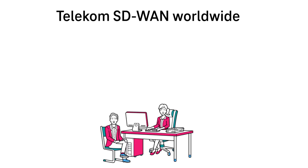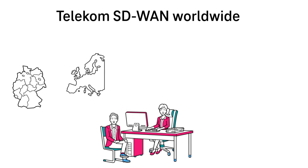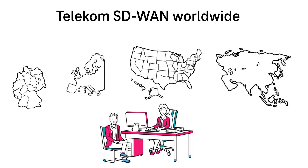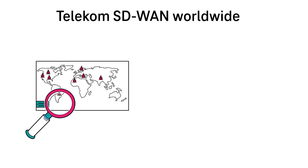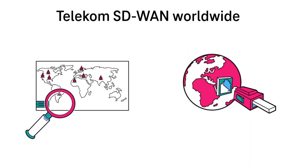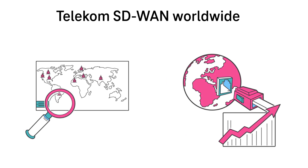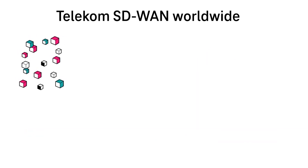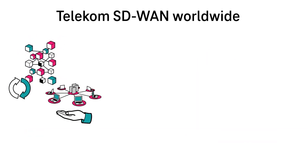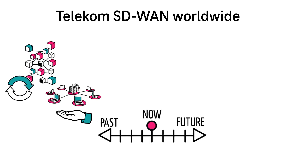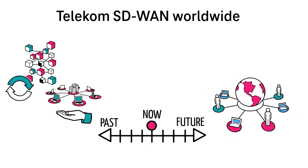Our business customers have many locations in Germany, Europe, the USA or Asia, for example in China. For all locations it is determined that the traffic flow is changing. This change requires a network refresh that provides MPLS-based services, and at the same time the demand for stable Internet access is increasing.